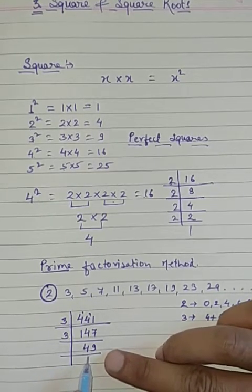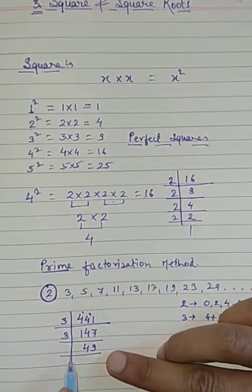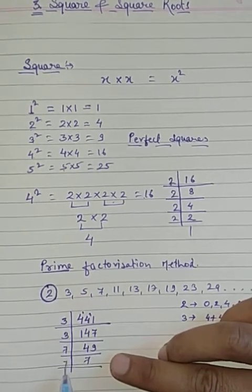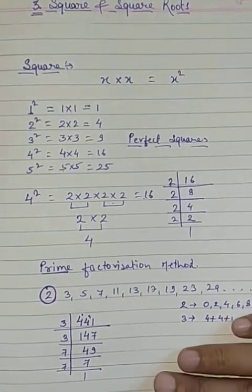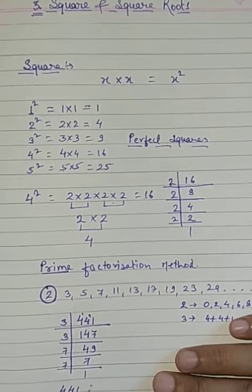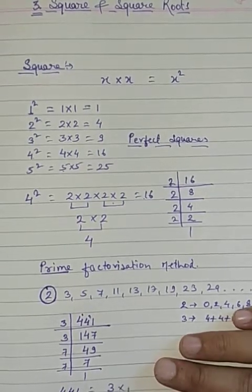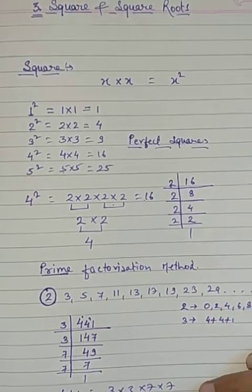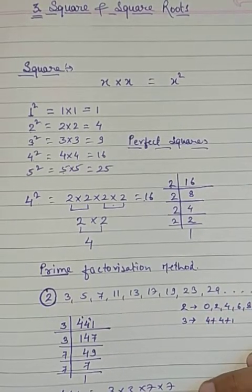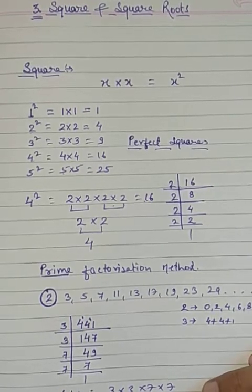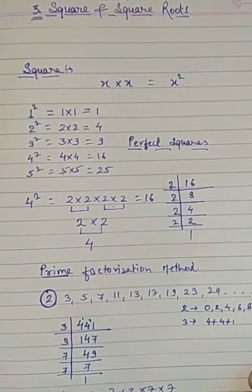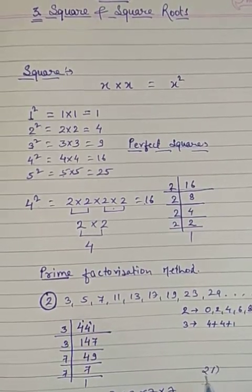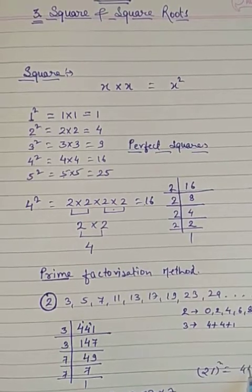Now number 441 is divisible by 3. So: 3 × 147, then 3 × 49, then 7 × 7. The pairs found are: 3, 3 and 7, 7. So we take one number from each pair: 3 × 7 = 21. This means 21 squared = 441.